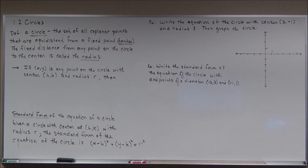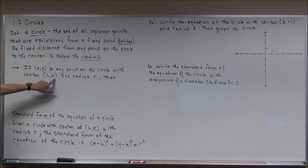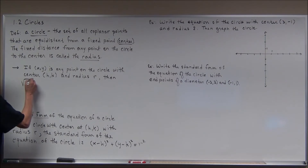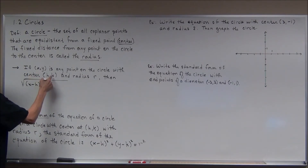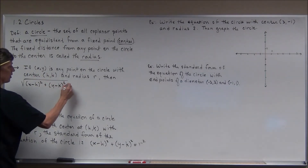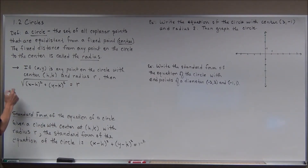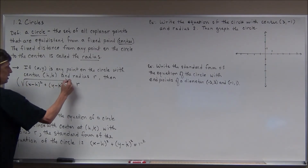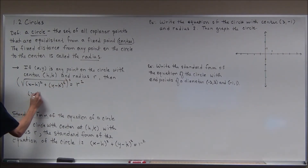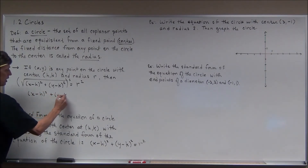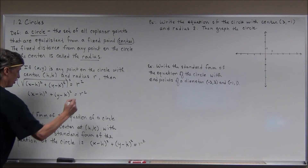We get the equation of a circle by using the distance formula. If (x, y) is any point on the circle with center (h, k) and radius r, then I can use the distance formula with these two points: the quantity (x minus h) squared plus the quantity (y minus k) squared equals the radius. I don't like the radical, so I'll square both sides, giving (x minus h) squared plus (y minus k) squared equals r squared.